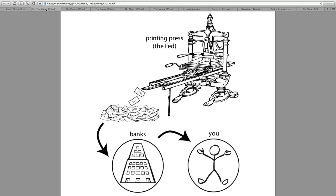The first diagram shows the Fed and the printing press, but this applies to all central banks around the world. They have the exact same policies because they're administered from a higher source. Here is that printing press, and they hand out the money to the commercial banks, which eventually goes to you.